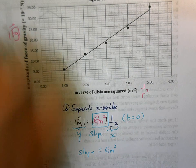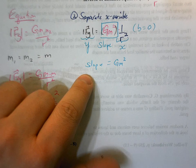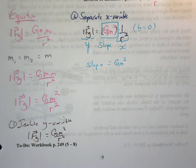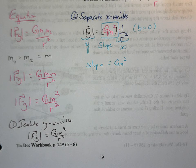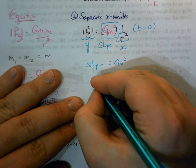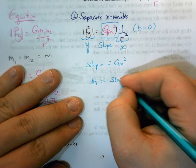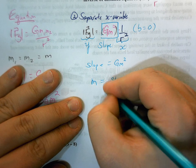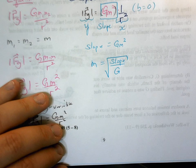So the slope of this line of best fit here, the slope of that line of best fit is going to equal the universal gravitational constant multiplied by the square of the mass. Or I could say M is just going to be the slope divided by G and then all square rooted.